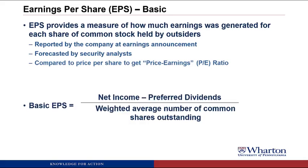We're going to start with basic EPS — basic earnings per share — which is defined as net income minus preferred dividends. We take out preferred dividends to get a notion of the return for common shareholders, and we divide that by the weighted average number of common shares outstanding.